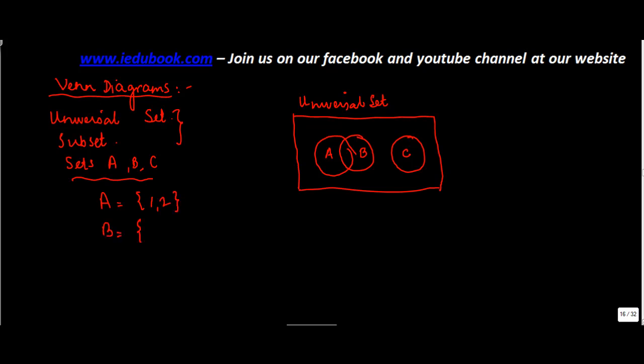So if you have to represent this in a Venn diagram, A contains what? One and two. So which is the portion that A is predominantly having? It's this portion. So you put in one over here, and two is also there.